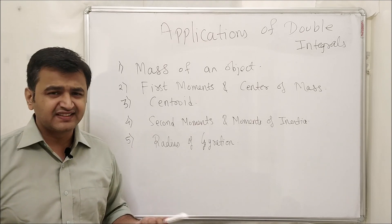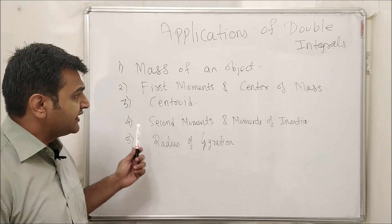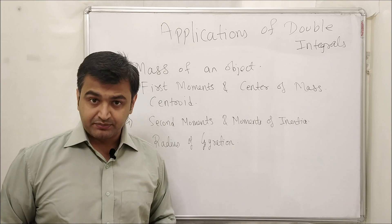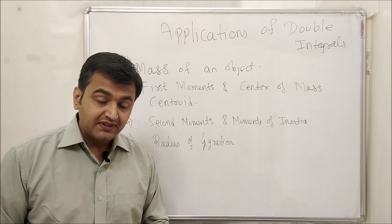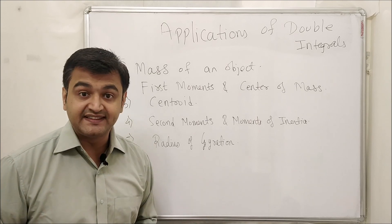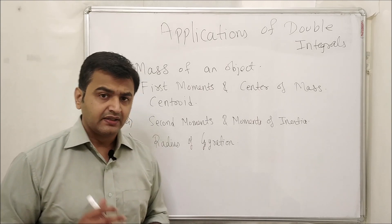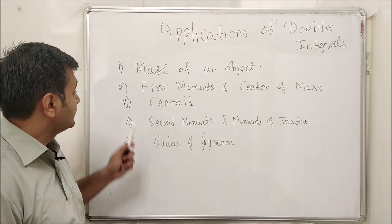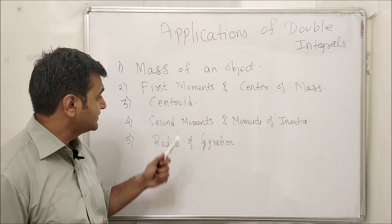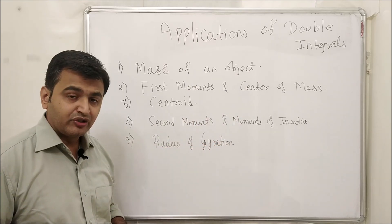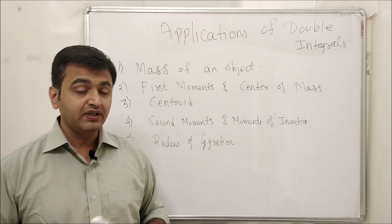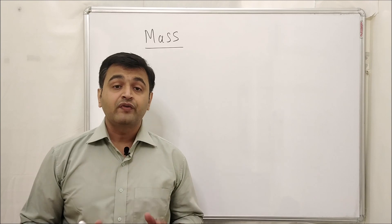Double integration also helps us find additional quantities you may have seen in your physics class. I'll be giving the definitions, formulas involving double integration, and taking a couple of examples with useful tricks and symmetry arguments. The topics we will cover are: mass of an object, first moments and center of mass, centroid, second moments and moment of inertia, and finally radius of gyration.